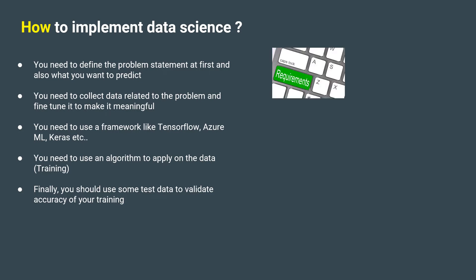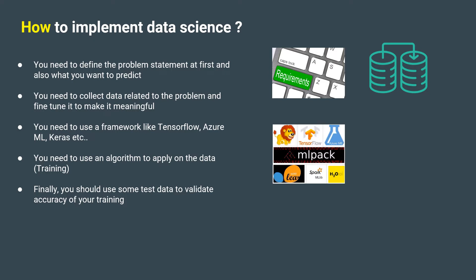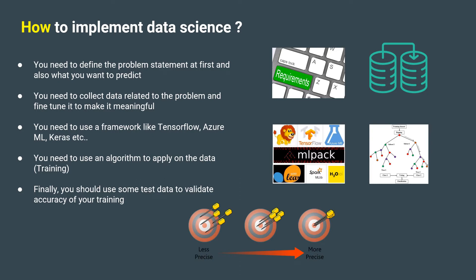You need to define the problem statement and what you want to predict. You need to collect all the required data and then fine-tune it to remove unwanted and bad data. You need to use a framework like TensorFlow, Azure ML, Keras, and many more. You need to select an algorithm to apply on the data — this is called training the model. Finally, you should test your model to validate the accuracy. In the next screen, we will see the lifecycle flowchart which explains this.